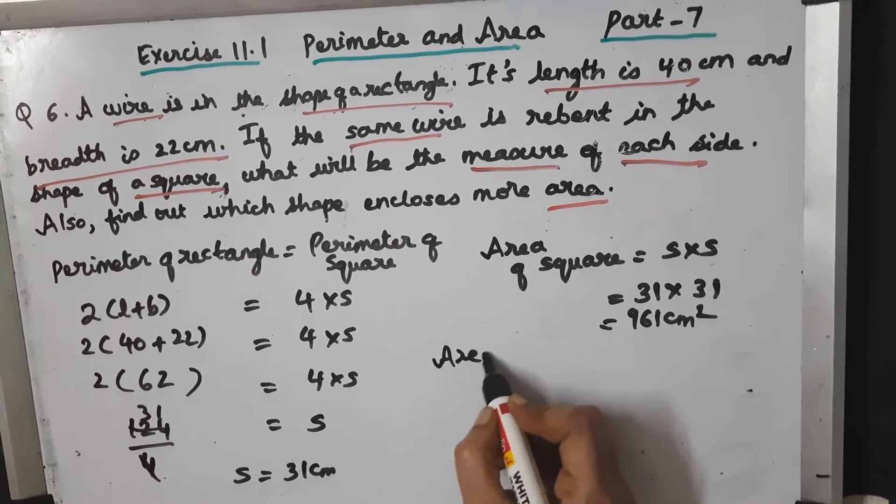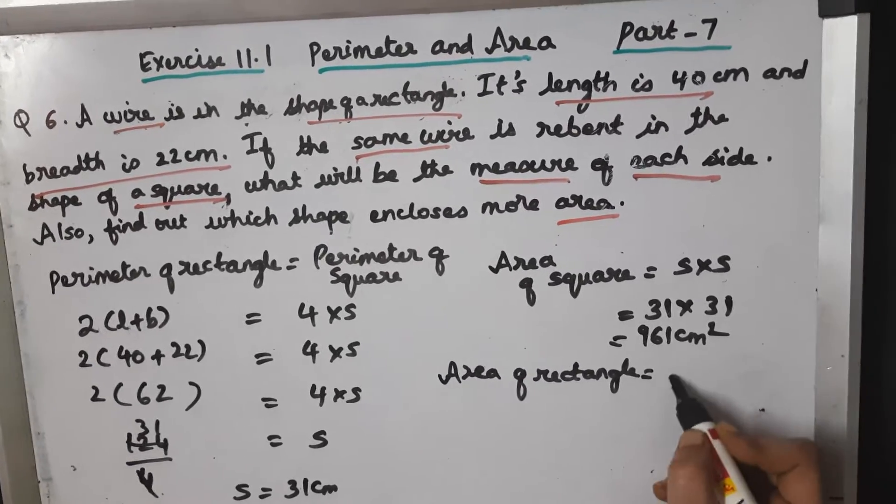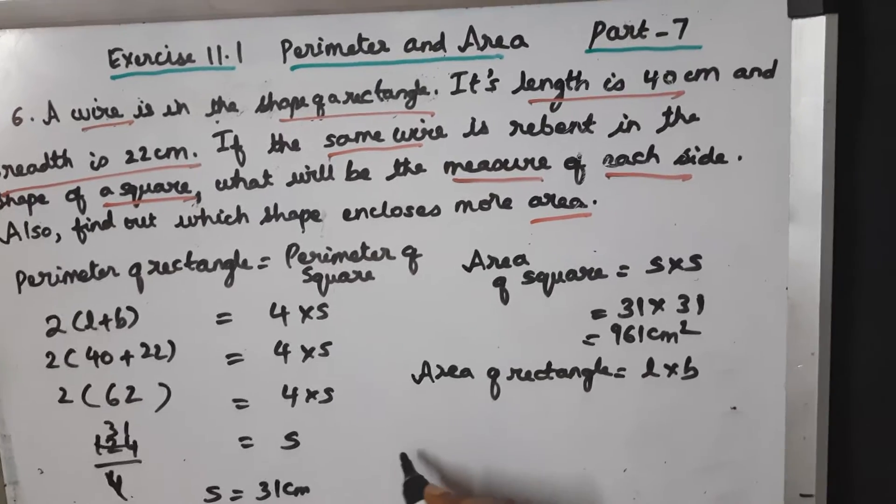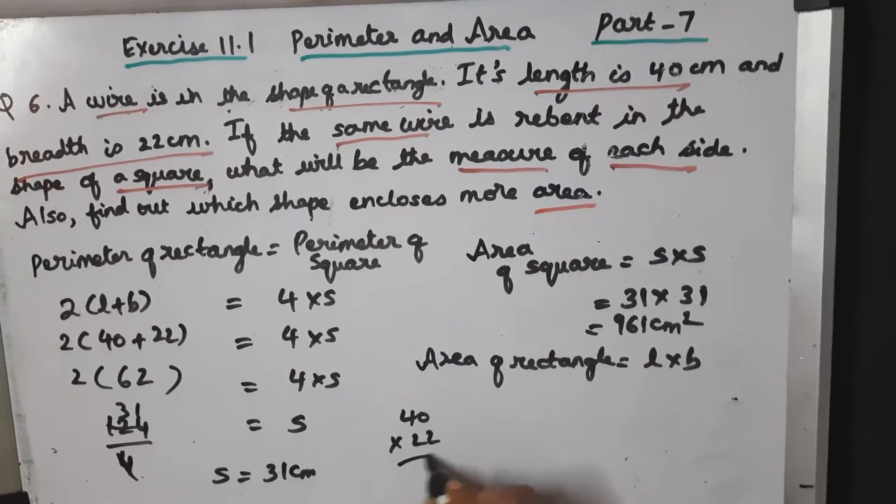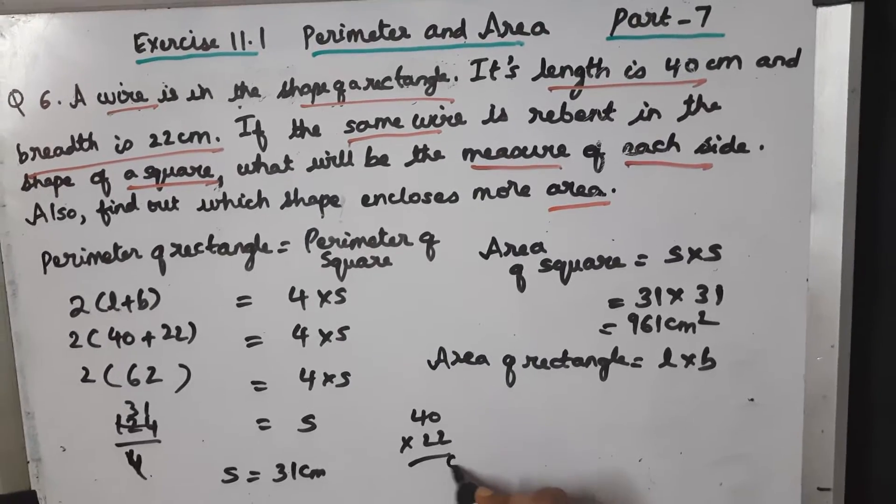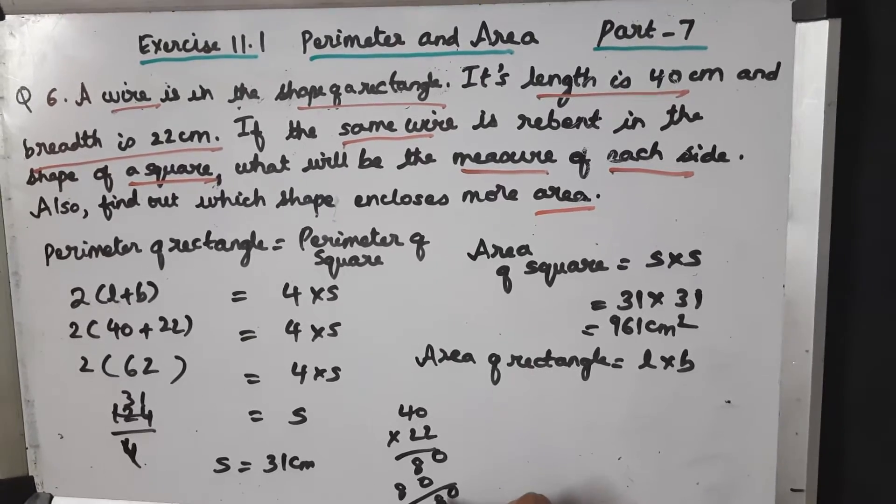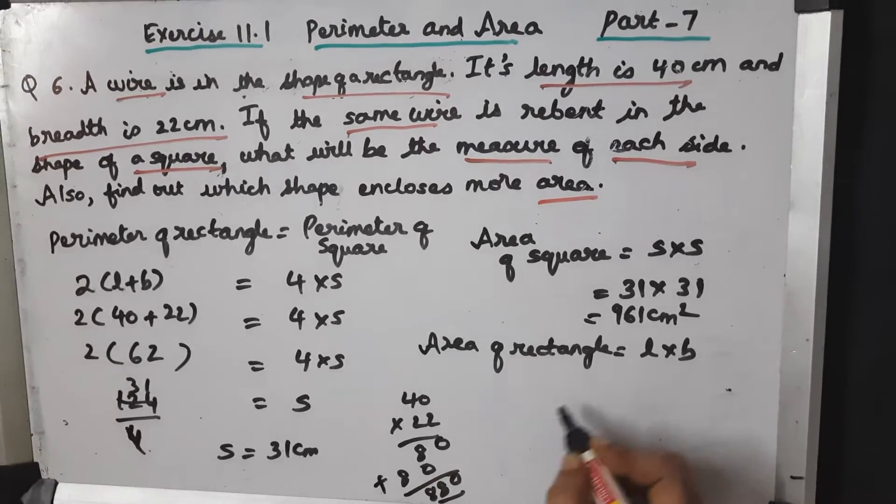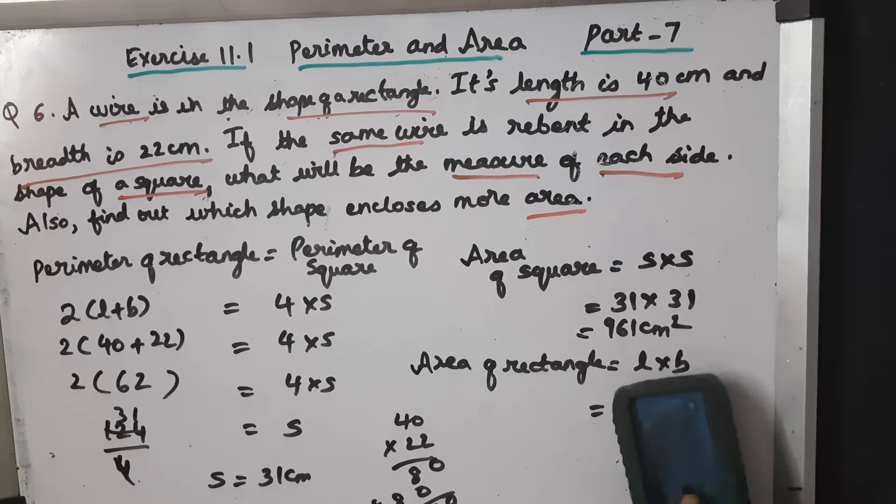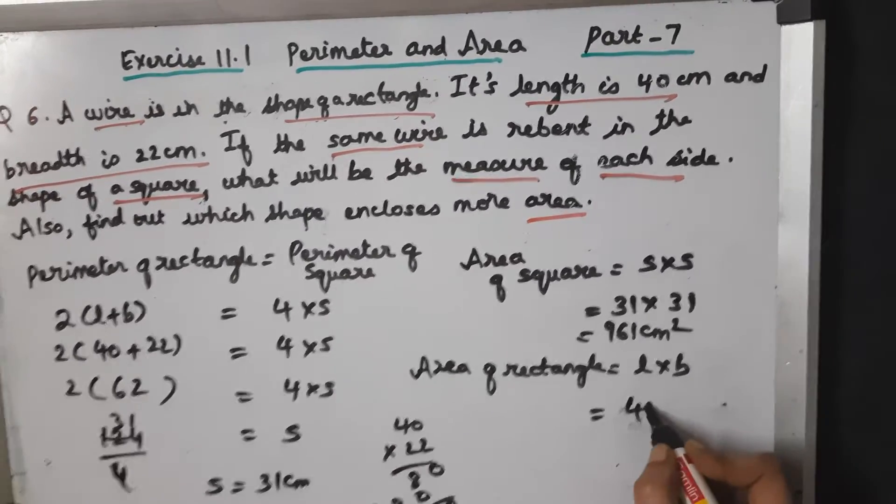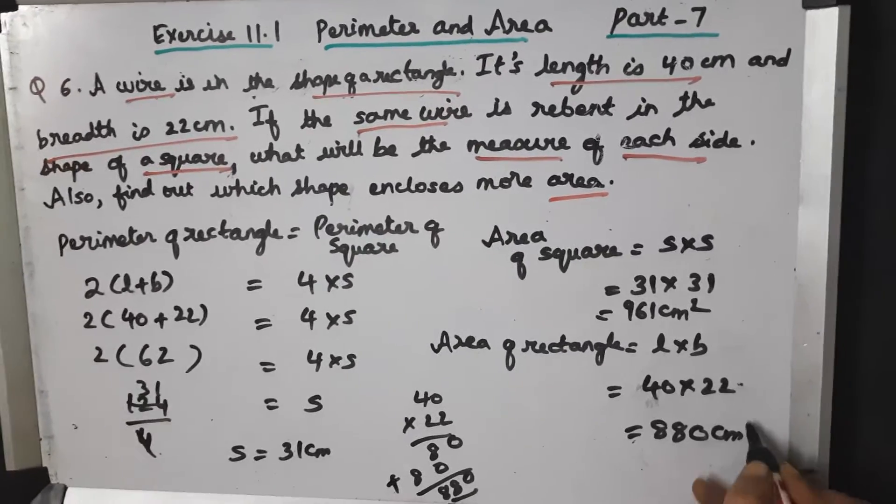Now, area of rectangle. Area of rectangle is length into breadth. What is length? 40. Breadth 22. 2 times 0 is 0, 2 times 4 is 8. Adding them gives 880. So 40 into 22 is 880 centimeter square.